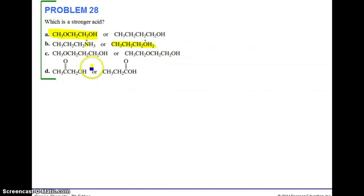the electron withdrawing oxygen is closer to the OH group in this molecule and therefore this is your stronger acid. And for D, because the electron withdrawing ketone group with the double bond and oxygen is closer to the OH, then this becomes the stronger acid. It wants to let go of this hydrogen faster.